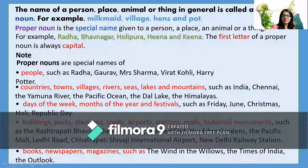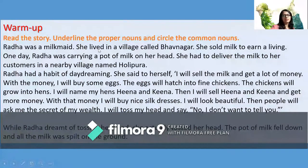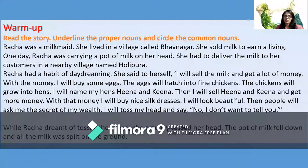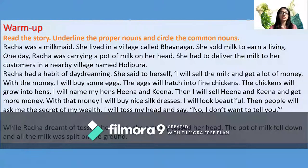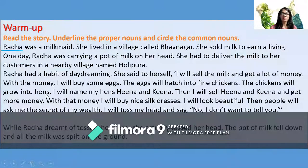Let's do some exercise to see what we have learned. We are going to read a story and underline proper nouns and circle the common nouns. 'Radha was a milkmaid. She lived in a village called Bhavnagar.' In these two lines, Radha and Bhavnagar are the proper nouns.